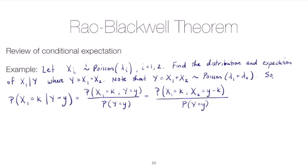So now we can plug in our distributions using the fact that we have independence. So in the numerator we have a joint probability but it's joint over two random variables x1 and x2 that are independent from one another, and so we can multiply their probabilities. So independence allows us to write the first PMF as e to the negative lambda one times lambda one to the k over k factorial.